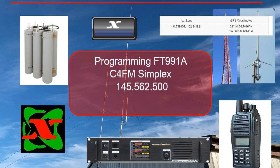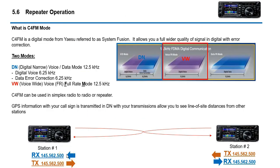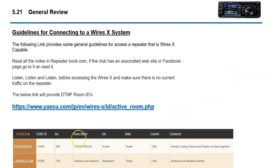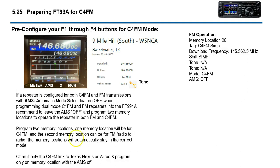What we're going to do today is program the FT-991A for memory location 20. The tag name we're going to give it is C4FM, the frequency is going to be 145.562.5, shift will be simplex, and the mode will be C4FM. AMS will be turned off, because this is a dedicated C4FM frequency so there shouldn't be any FM traffic on there. That's what we're going to do — we'll switch over to the radio and get started.